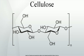Some animals, particularly ruminants and termites, can digest cellulose with the help of symbiotic microorganisms that live in their guts. Humans can digest cellulose to some extent, but it mainly acts as a hydrophilic bulking agent for feces and is often referred to as a dietary fiber.